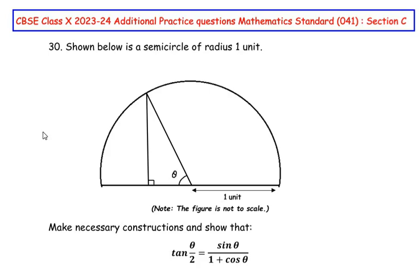Hello and welcome to my channel. In this video we are going to solve the 30th question from CBSE Class 10, 2023-24 additional practice questions for mathematics standard with subject code 041, Section C, where each question is of three marks. This question is from the introduction to trigonometry chapter.